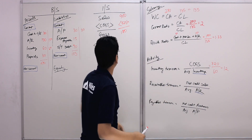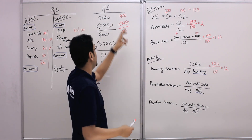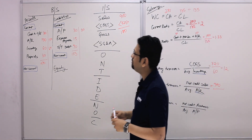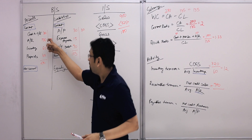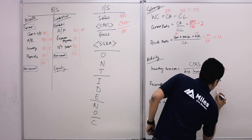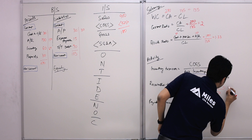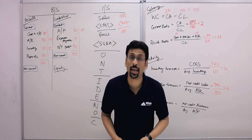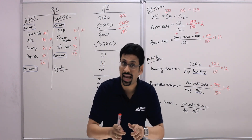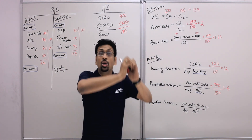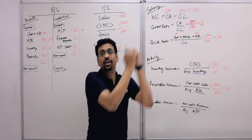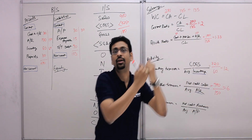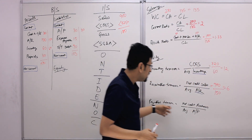For receivables turnover, assuming all sales were on credit — net credit sales of 900 divided by average receivables of 150 (which is 150 plus 150 divided by 2) gives us 6. The receivables turnover was 6 times — the business sold goods on credit and collected cash 6 times during the year.